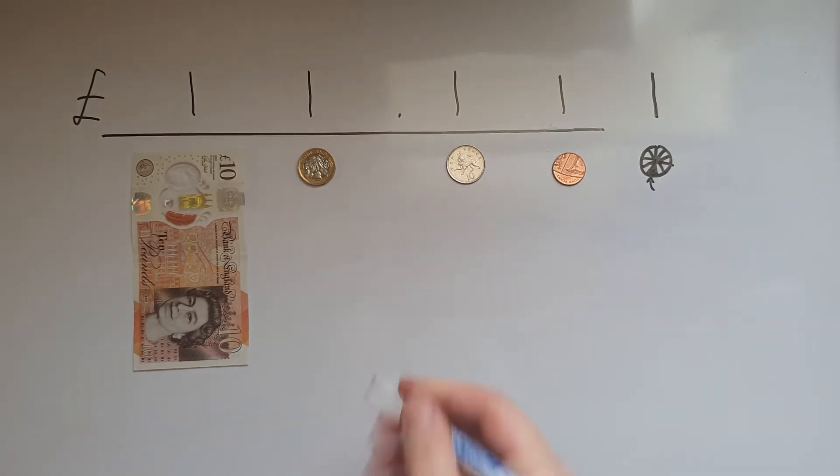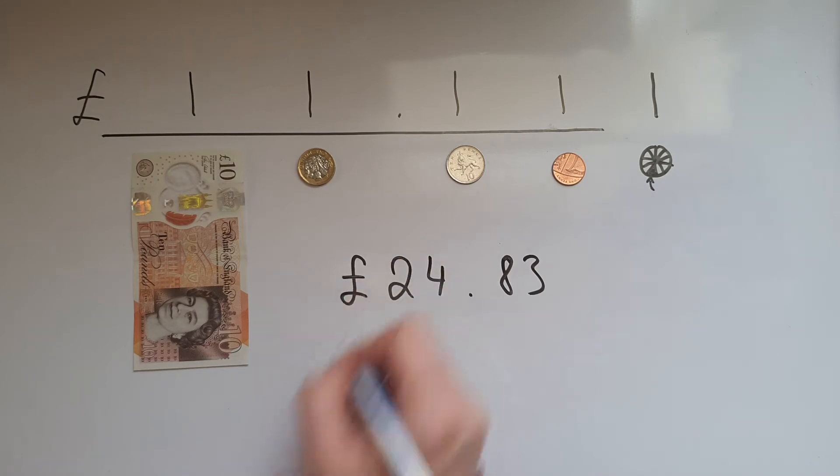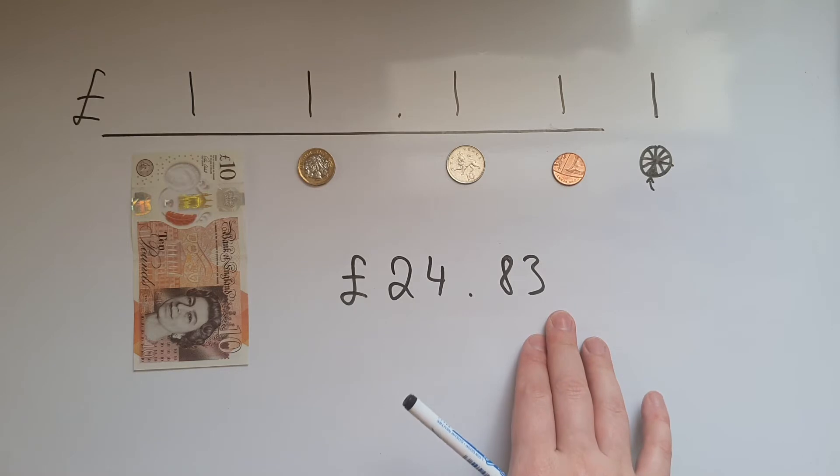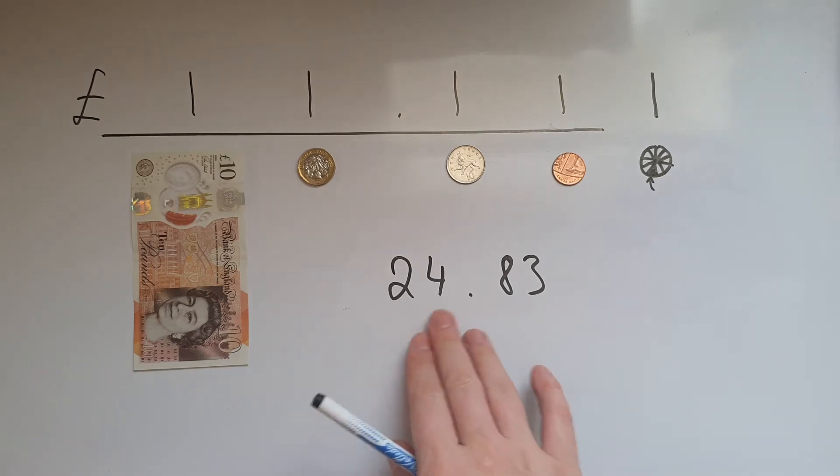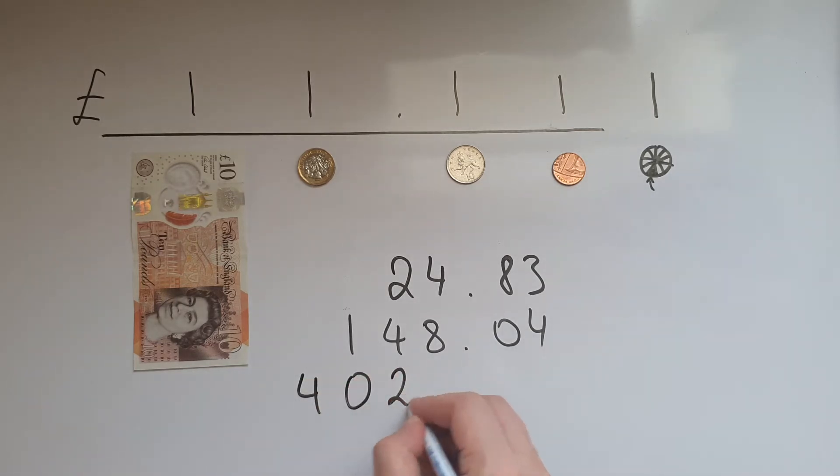So if I have this amount, this would be 24 pounds and 83 pence. If you didn't have a pound sign in front, I would read this as 24.83, 148.04, 4026.486.